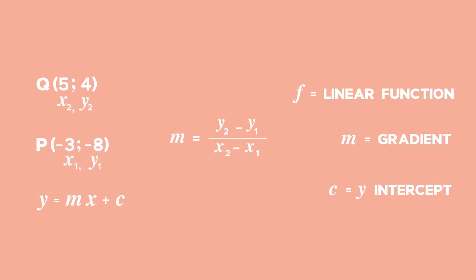Now substitute the values of the points P and Q into the formula used to determine the gradient. Substitute y2 with 4 and y1 with -8. Two negative values form a positive, so write the numerator as 4 plus 8. For the denominator, substitute x2 with 5 and x1 with -3. This is written as 5 plus 3.